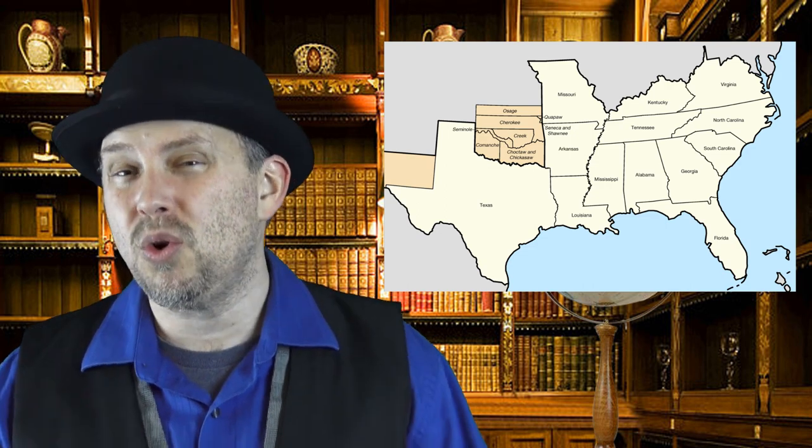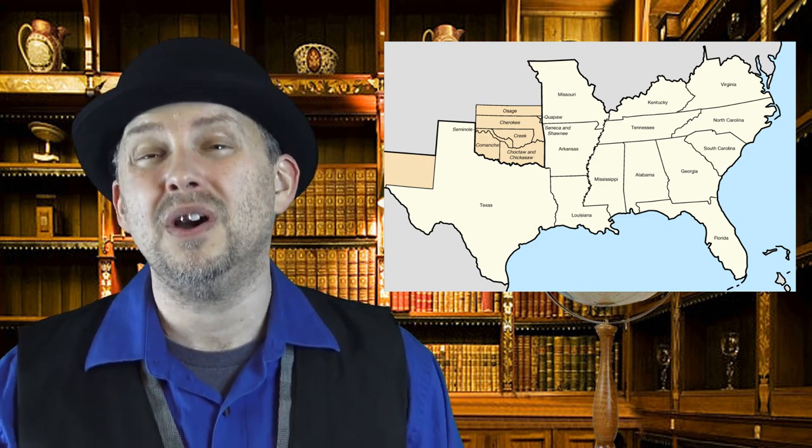Lincoln held office from 1861 to 1865. Tensions were already high between northern and southern states over banning the expansion of slavery at the time. When Lincoln was elected, some southern states used it as an opportunity to adopt an ordinance of secession, starting with South Carolina. Florida, Mississippi, Alabama, Georgia, Louisiana, and Texas would soon follow, declaring themselves a sovereign nation, the Confederate States of America.